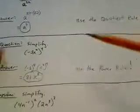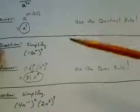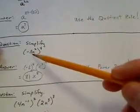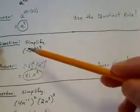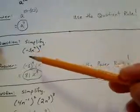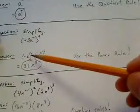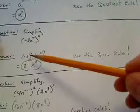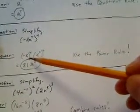Let's take a look at the power rule. The power rule says when we have a power, we need to multiply the exponents. If we have negative 3x squared, all in parentheses, raised to the 4th power, that means we're going to raise everything inside to the 4th power. So that means taking negative 3 raised to the 4th power — that's negative 3 times negative 3 times negative 3 times negative 3, four times.